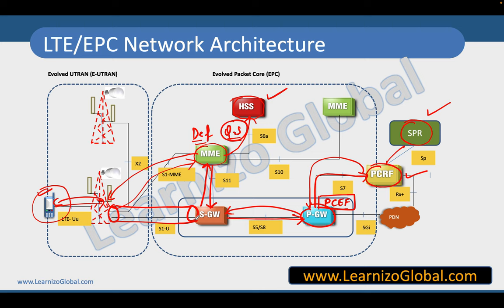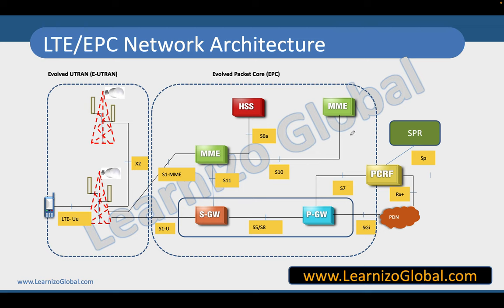Every time you create a default or dedicated bearer, you need a certain type of quality of service. These are defined in 3GPP documents, and you can refer to the QCI table for typical QCI values and their priorities. The interface between PGW and PCRF — written as S7 here — was initially defined as the Gx interface between GGSN and PCRF. In 4G we call this the S7 interface, and the communication over it is based on the diameter protocol.